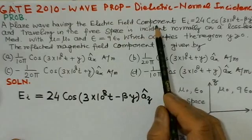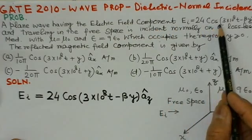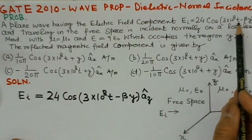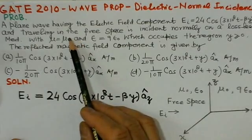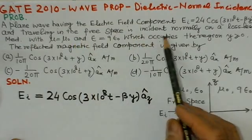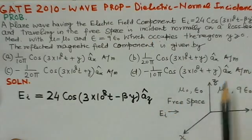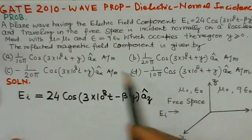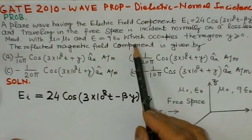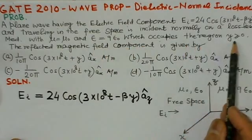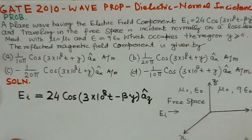A plane wave having the electric field component Ei = 24 cos(3×10^8t - βy)az and traveling in free space is incident normally on a lossless medium with μ = μ0 and ε = 9ε0, which occupies the region y greater than or less than 0.